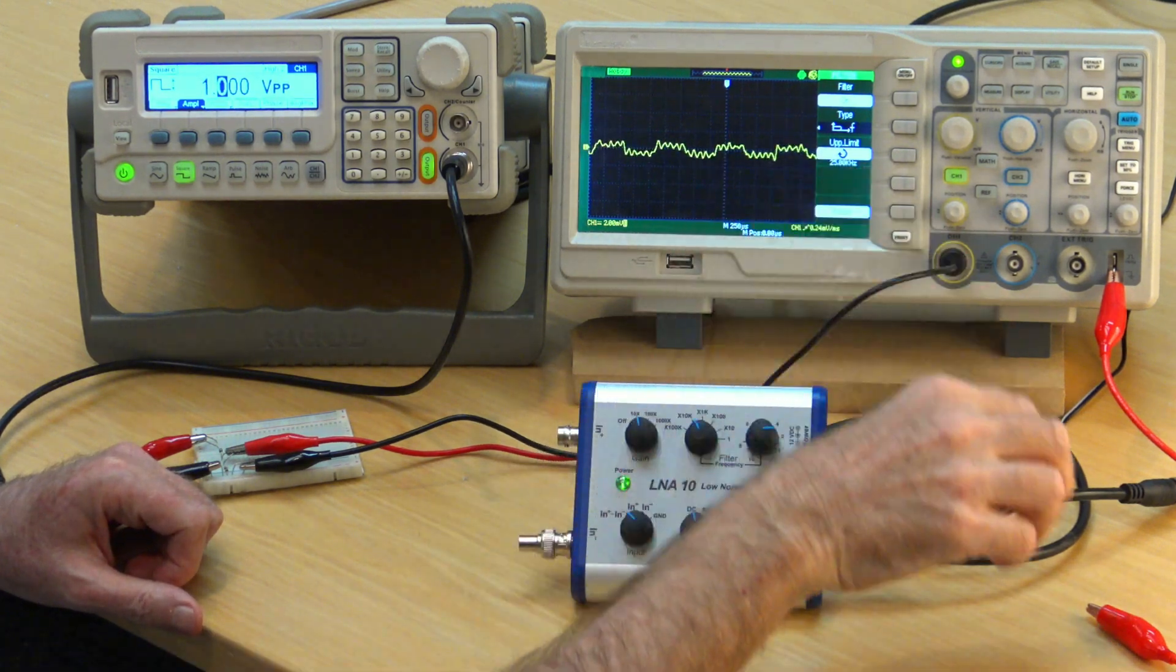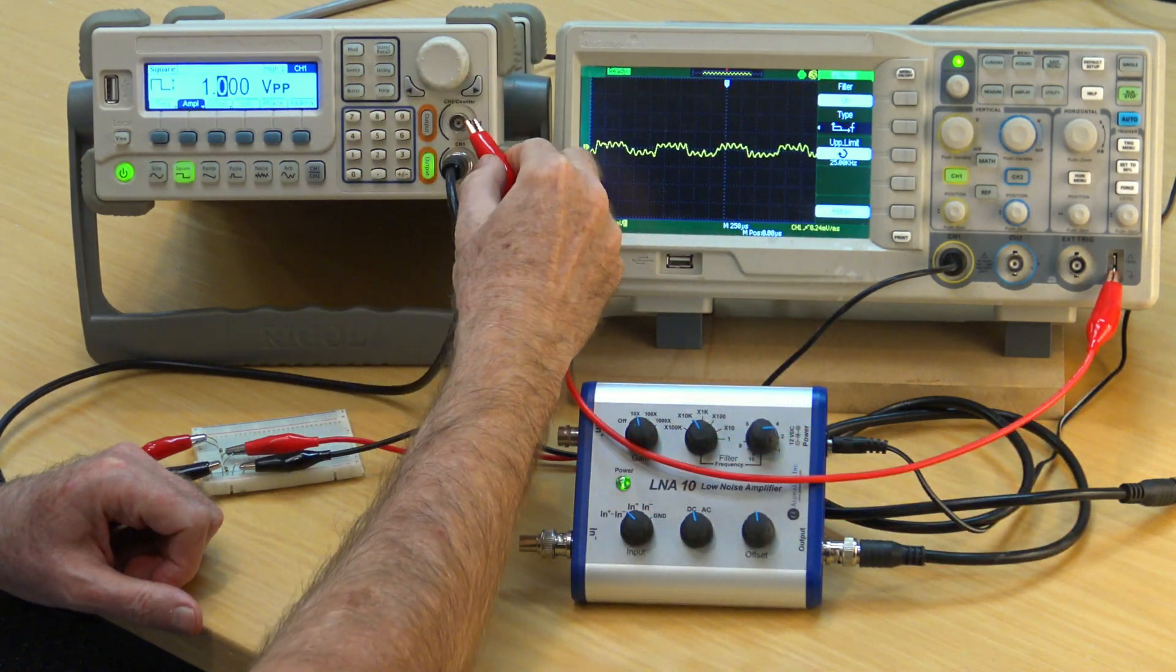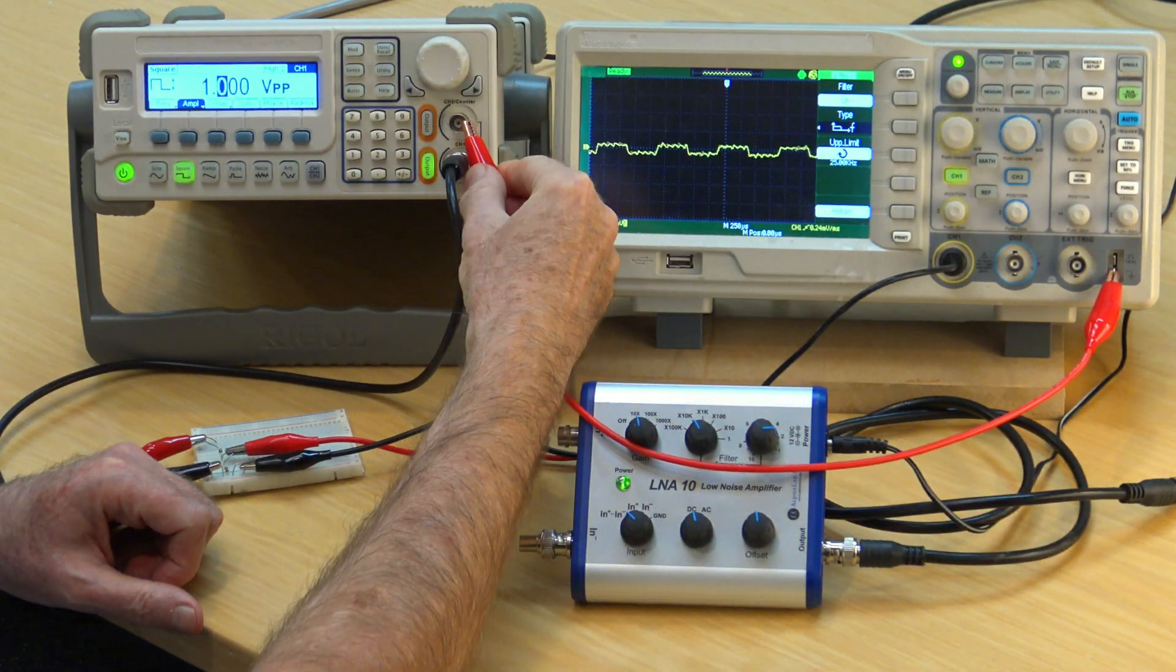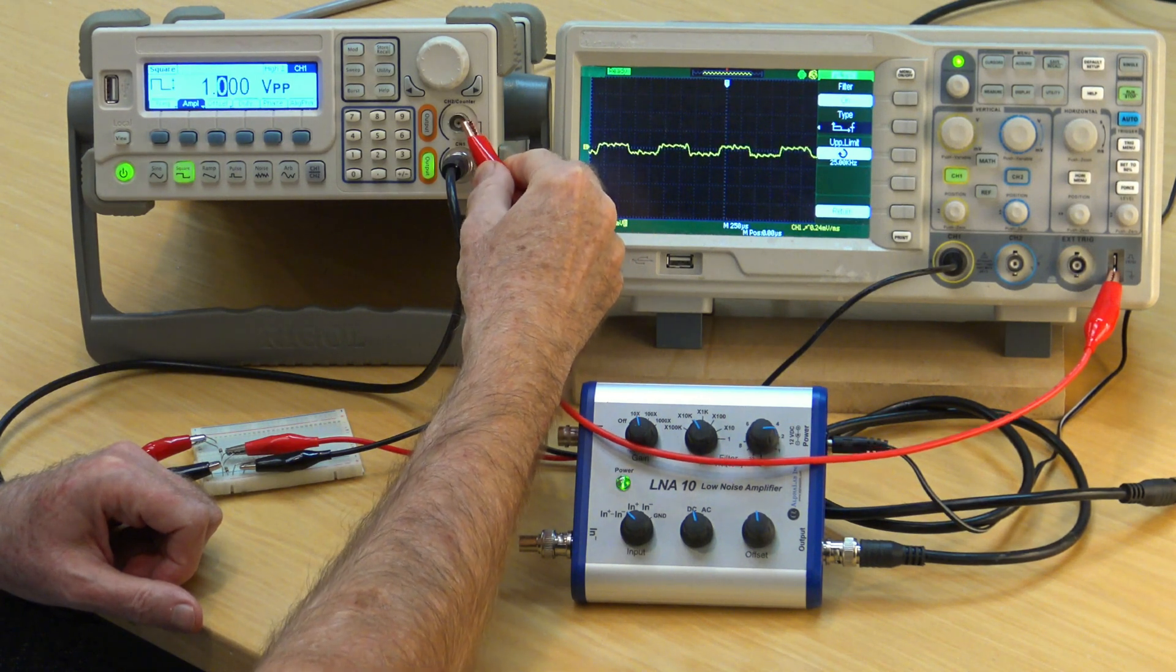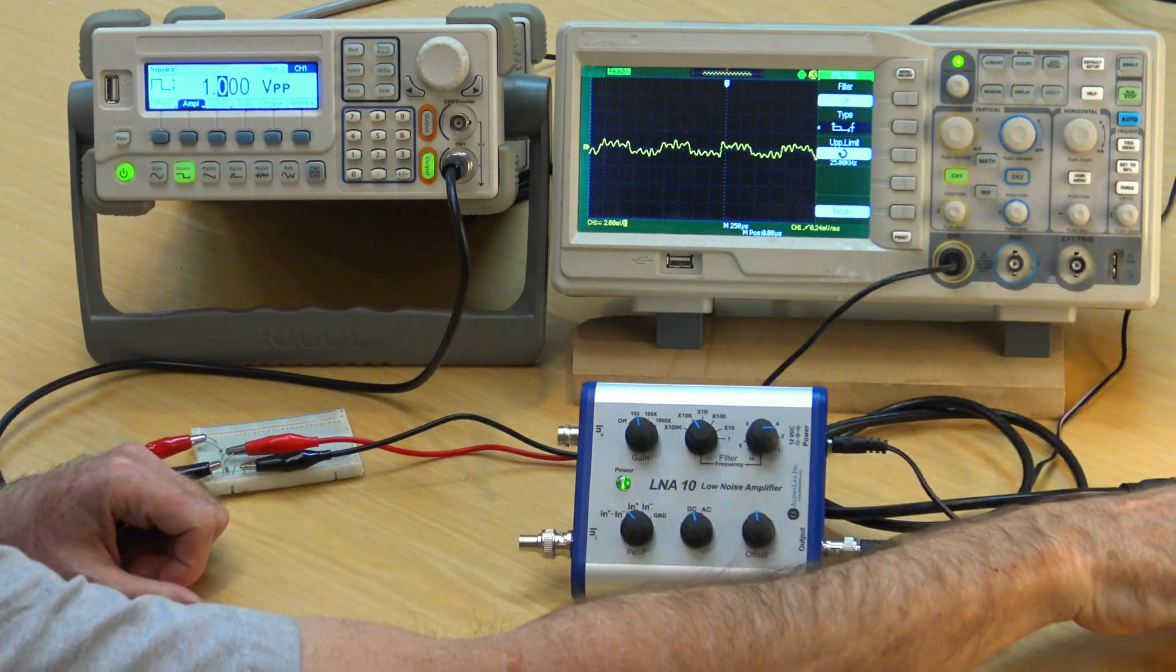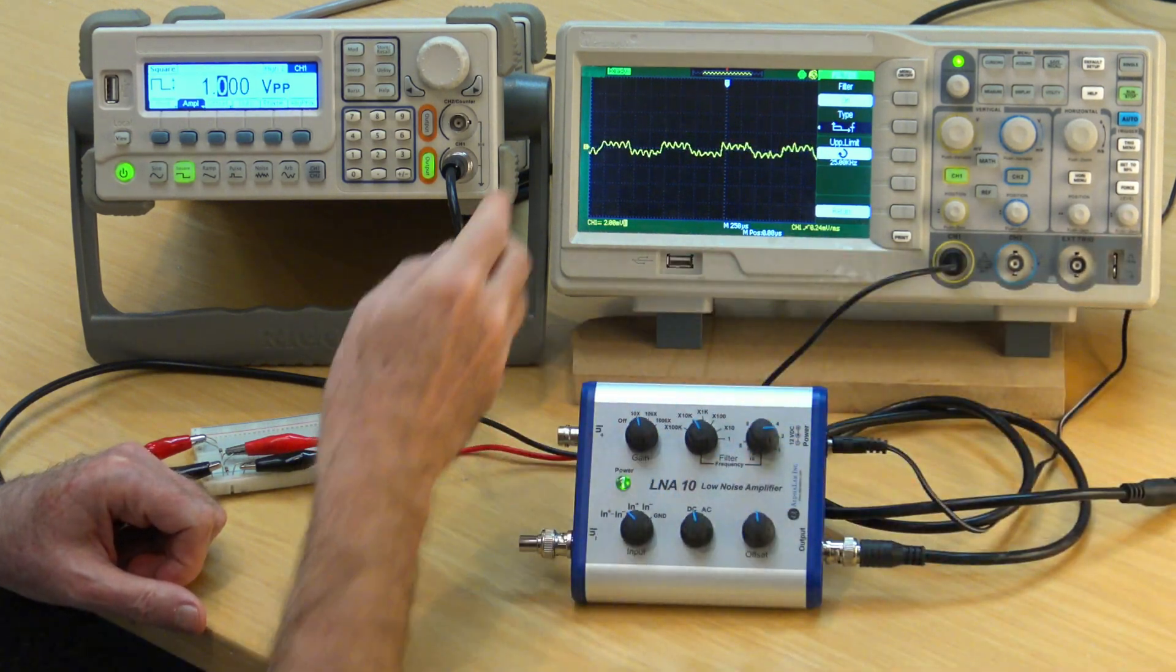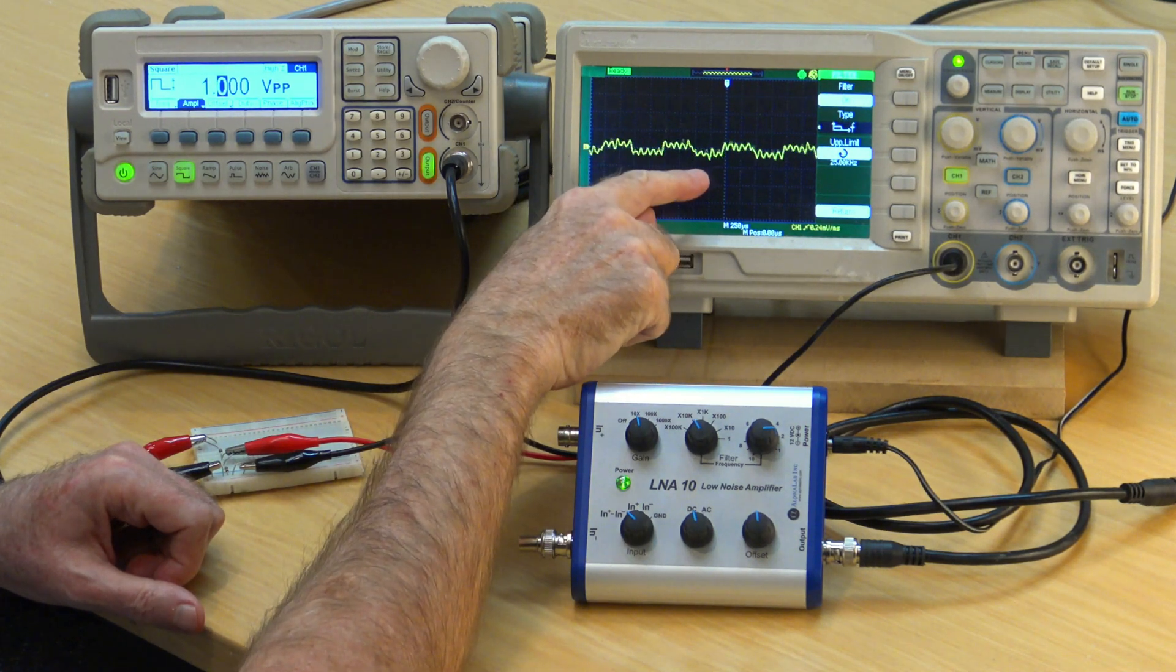You can reduce this common mode noise somewhat by more strongly grounding everything together but it's still there. This is why single-ended input scopes typically only go down to one or two millivolts per division. Although the amplifier in the scope is fairly low noise, the common mode noise is usually a few hundred microvolts.